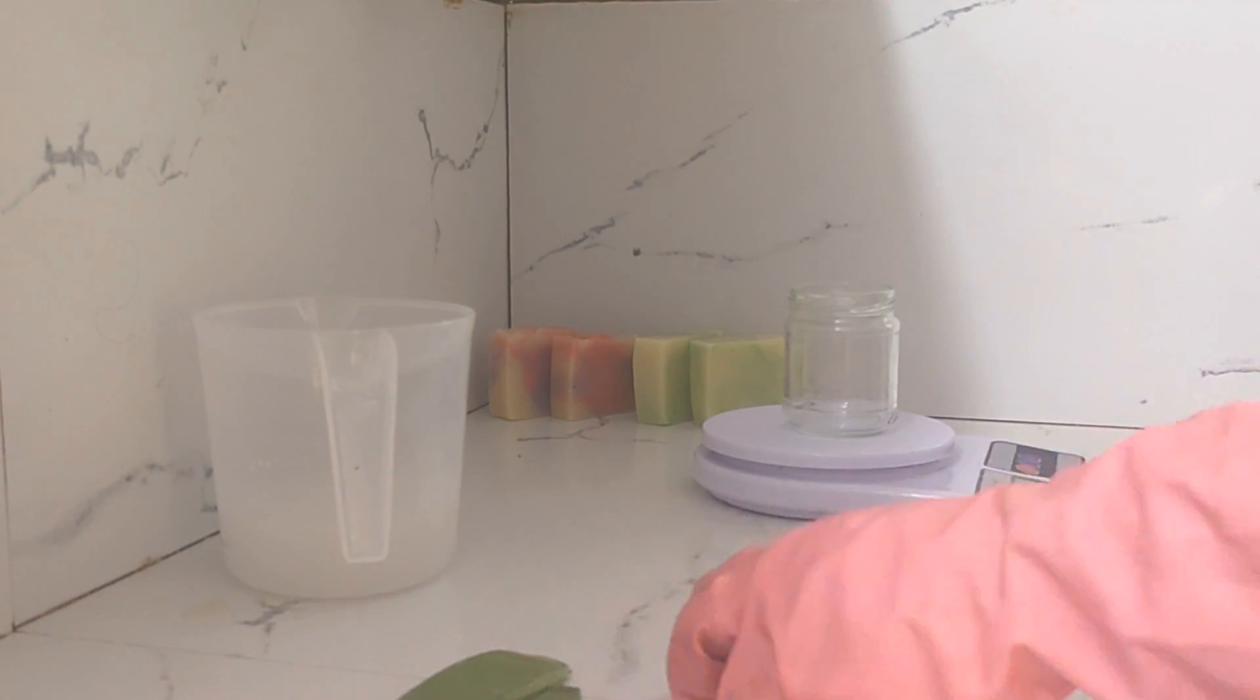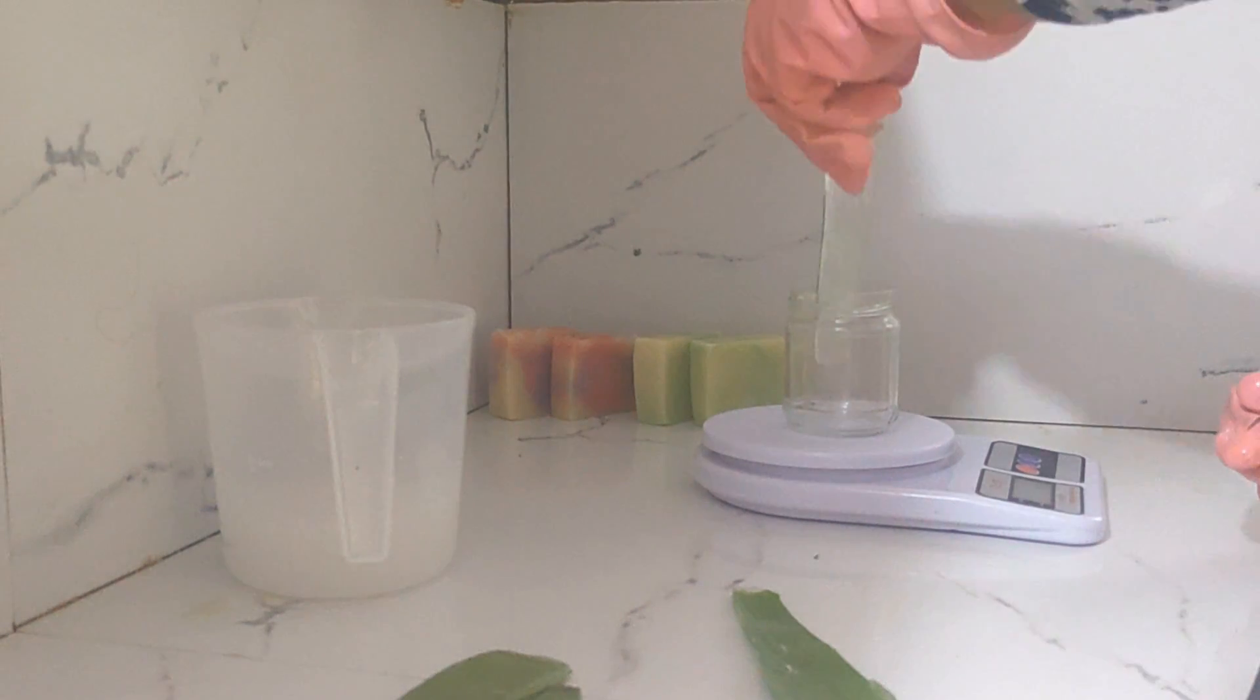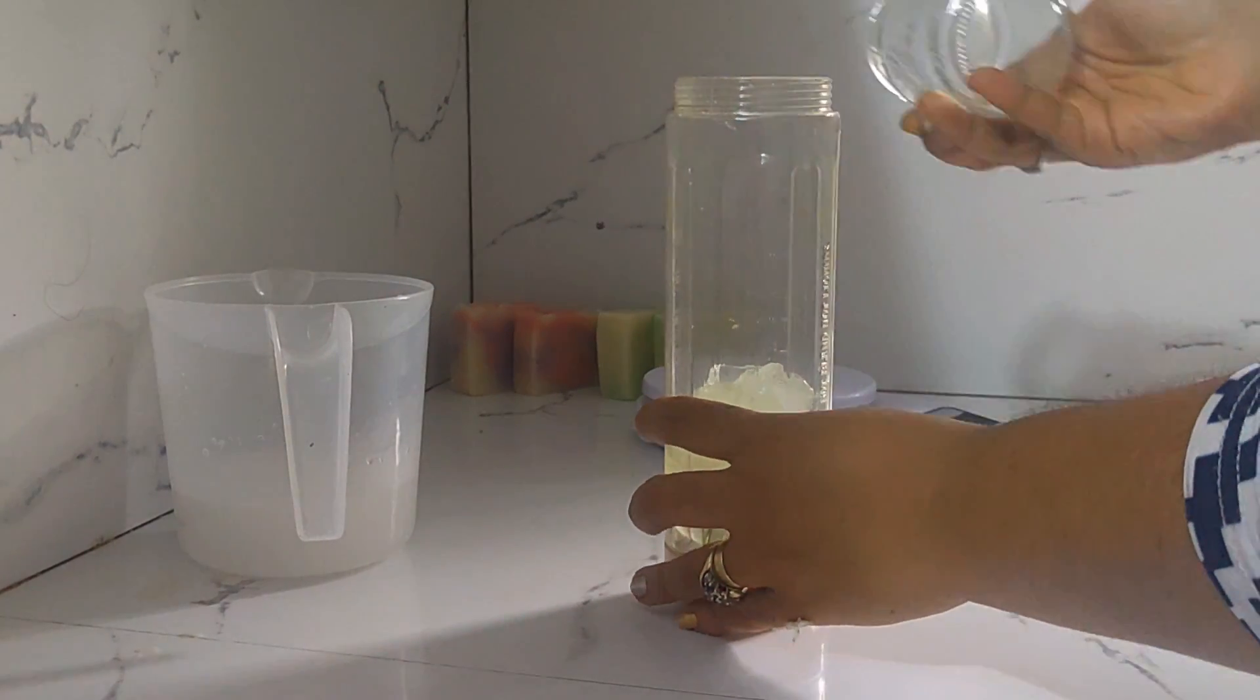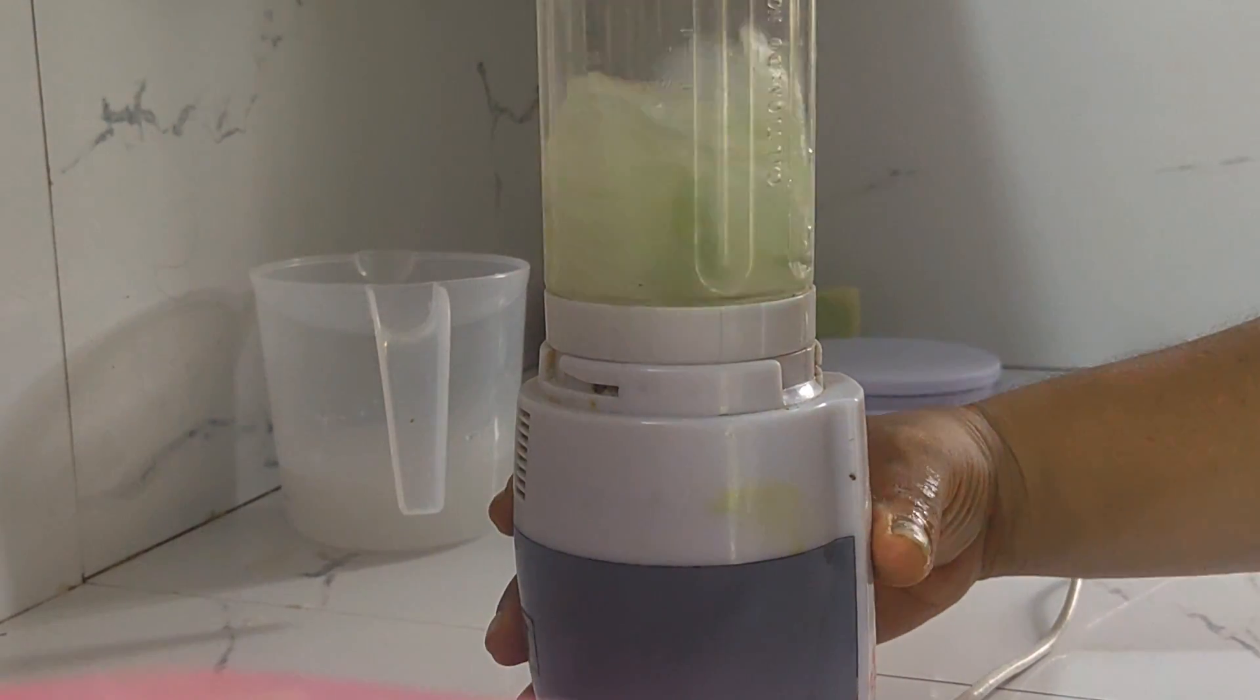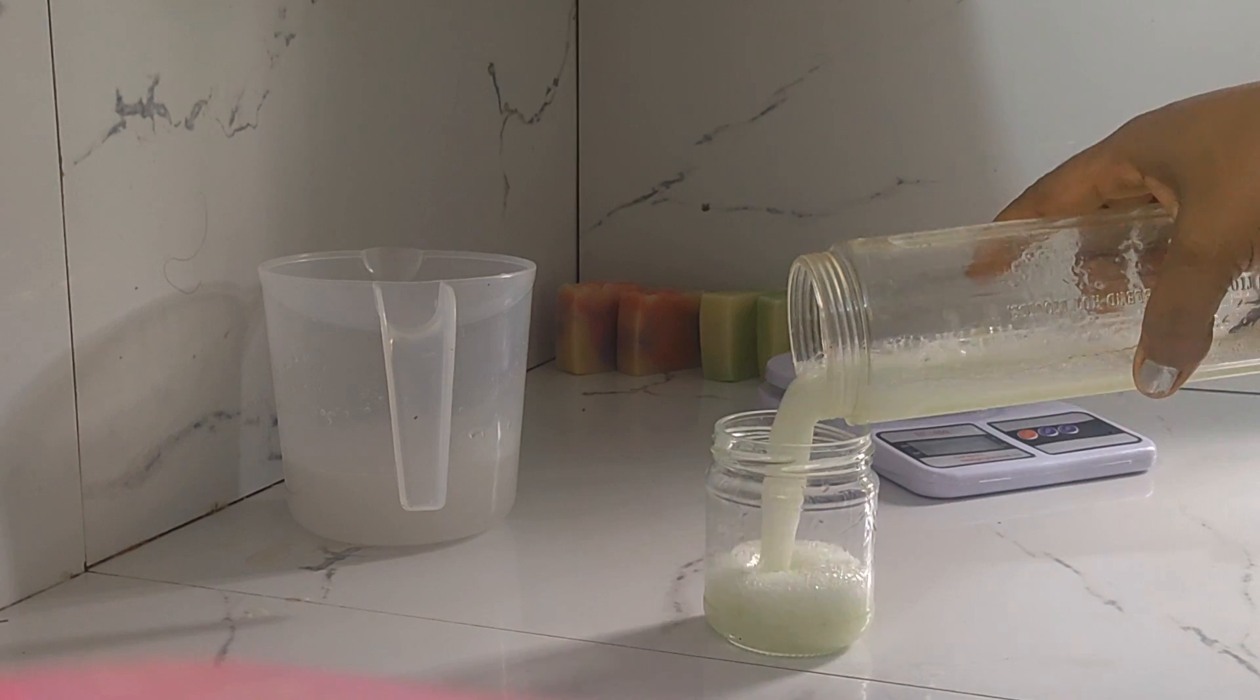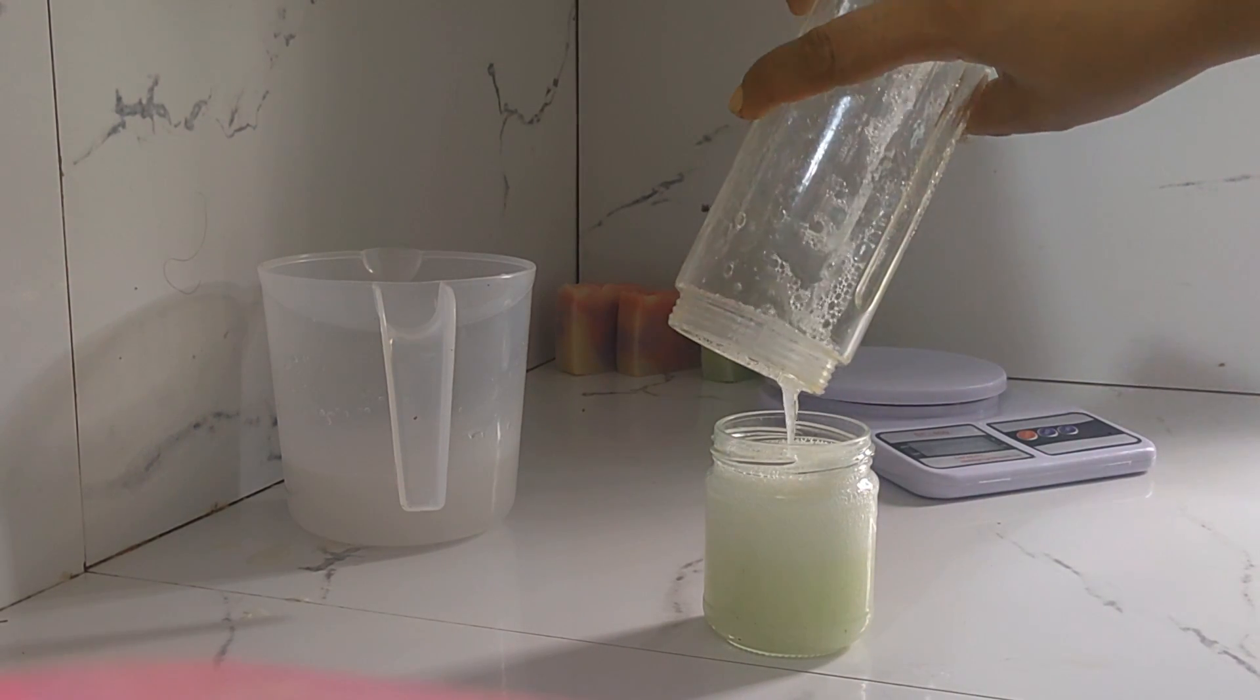Like I said earlier, the aloe vera is part of the water content of our formula. So I've discounted the water, that is the ice, and I'm using that difference to measure the aloe vera. We're using 120 grams of aloe vera. You can see how watery it has become after we blend it.